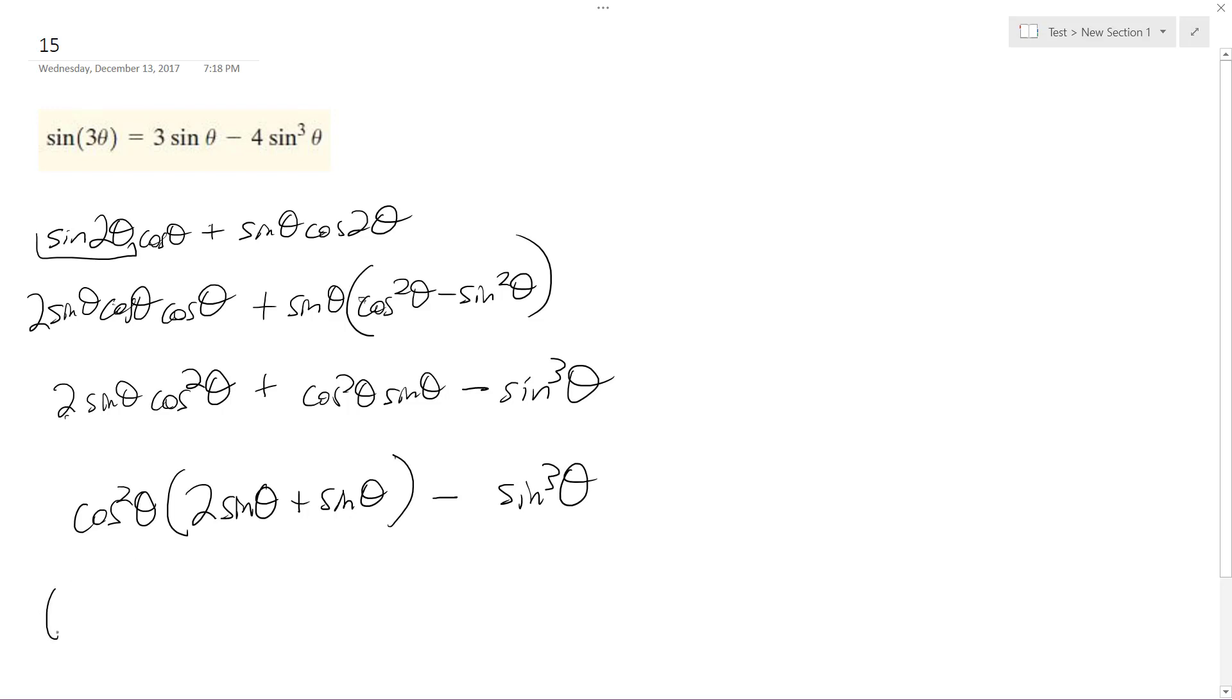I'll keep doing this. This cosine squared can be remade to be 1 minus sine squared theta. Oh wow, so that's just 3 sine theta.